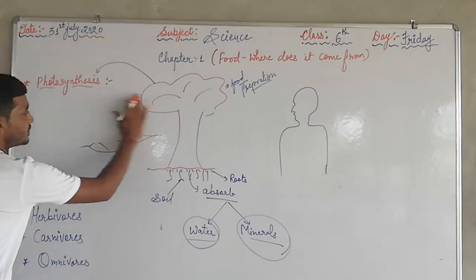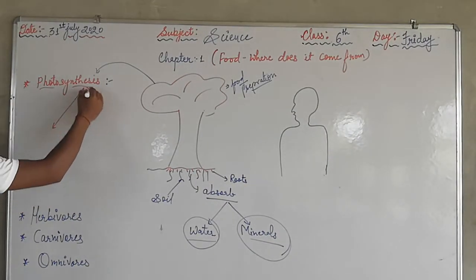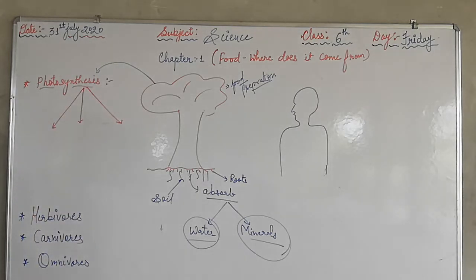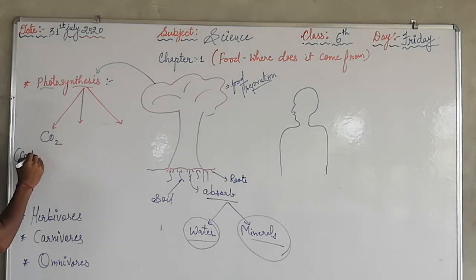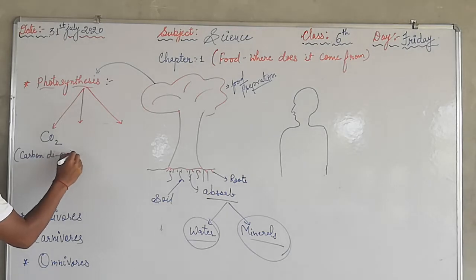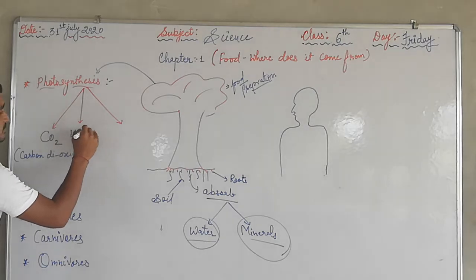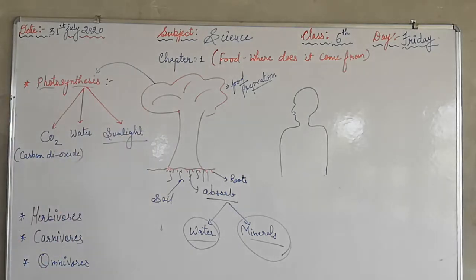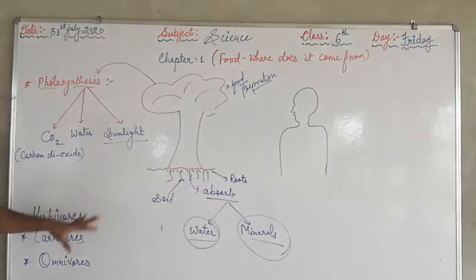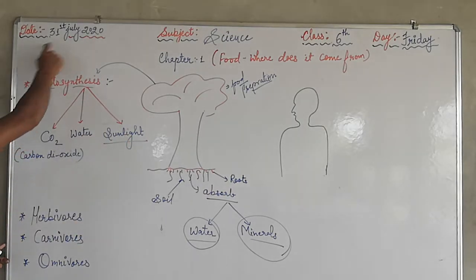In the photosynthesis process, three elements are required. Those three elements are: CO2, which means carbon dioxide; water; and sunlight. During the photosynthesis process, a plant requires these three elements — carbon dioxide, water, and sunlight — and through this process, food preparation will take place.